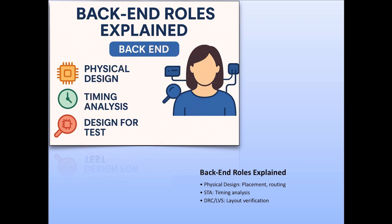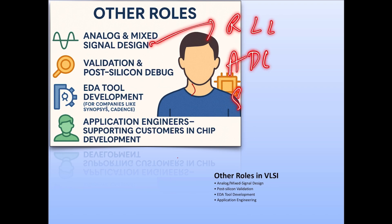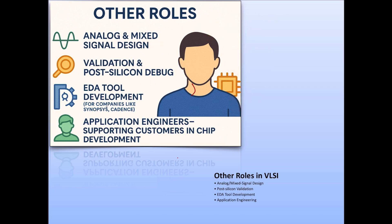If you are detail-oriented and like working with timing, floor plans, and real hardware constraints, back end is an awesome fit for you. For analog and mixed signal design, you work on PLLs, analog-to-digital converters, and SERDES — things that interact at a physical, real-world level. For post-silicon validation, you test real silicon in the lab, debugging with oscilloscopes and logic analyzers. For EDA tool development, you build tools that others use, like synthesis tools, simulators, and layout editors.